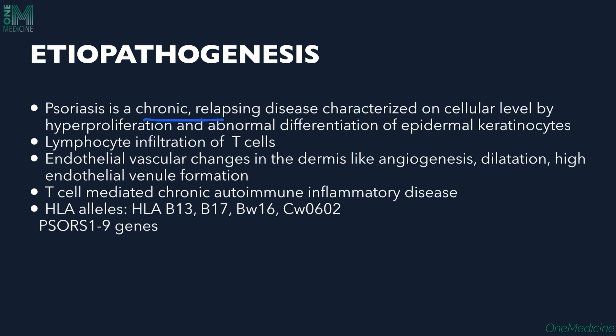Psoriasis is a chronic relapsing disease characterized at the cellular level by hyperproliferation and abnormal differentiation of the keratinocytes - increased keratinocyte proliferation. Along with that, there is lymphocytic infiltration of T-cells in the epidermis, and endothelial vascular changes are seen in the dermis, including angiogenesis, dilatation, high endothelial venule formation, and increased tortuosity.